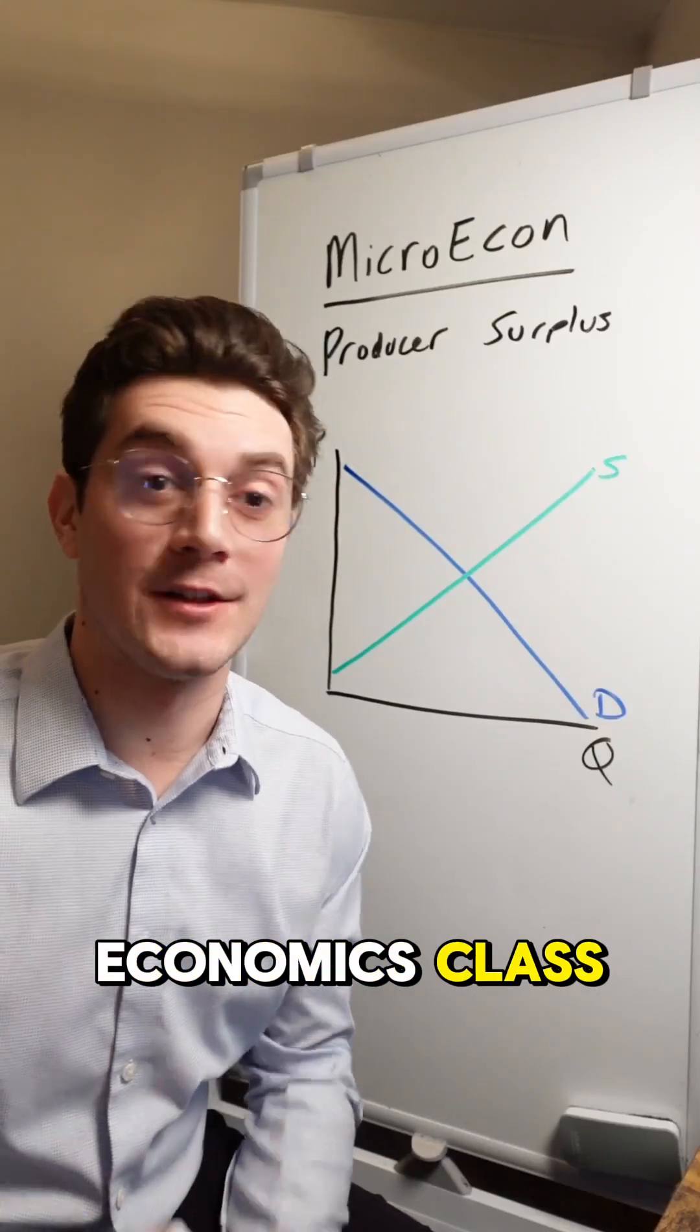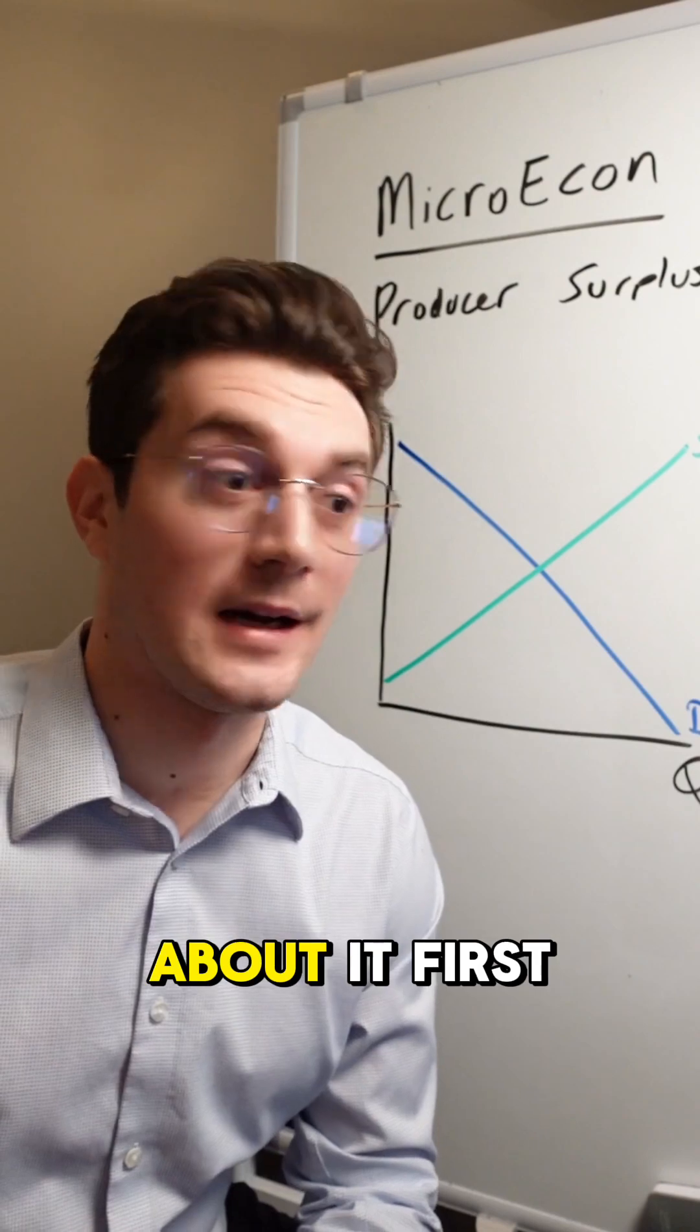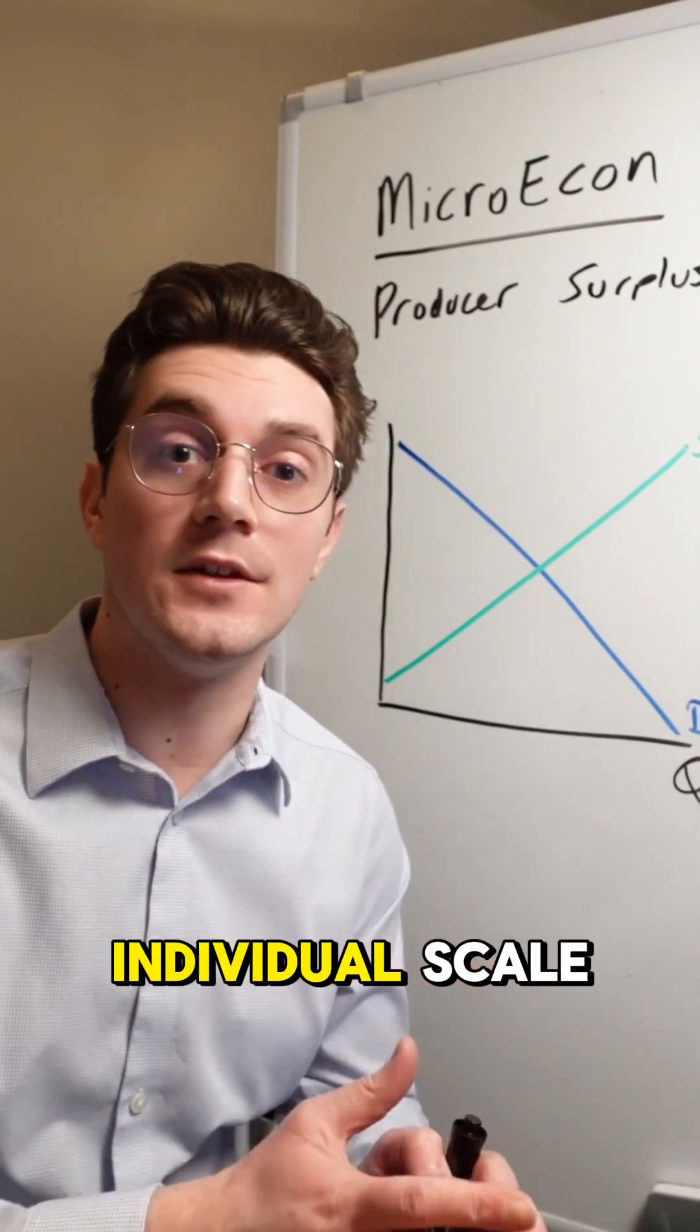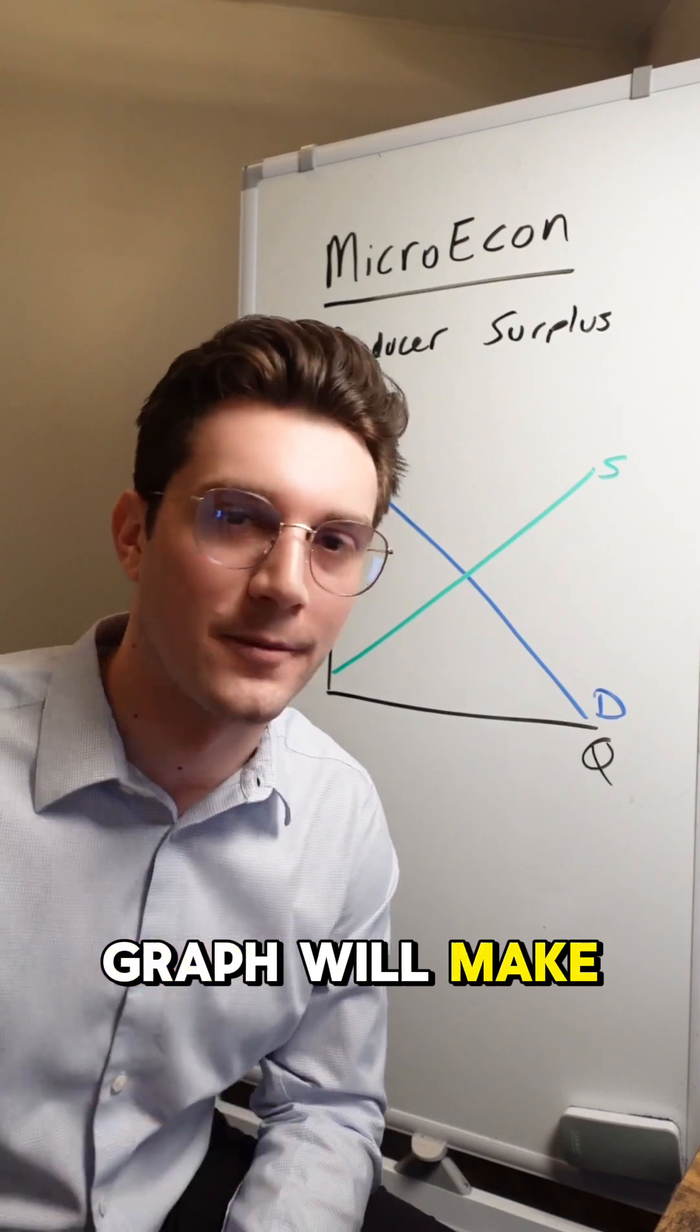If you're in your first microeconomics class, you're going to learn about producer surplus. Here's what you actually got to know about it. First, you got to understand it on an individual scale, and then the producer surplus triangle on the graph will make more sense.